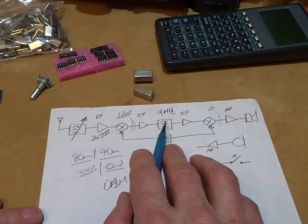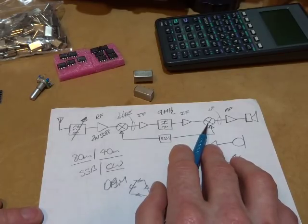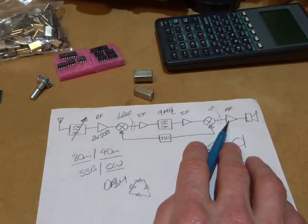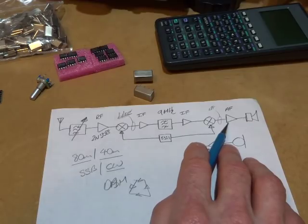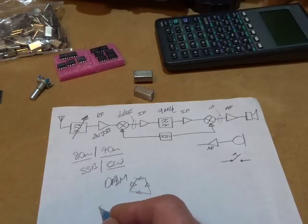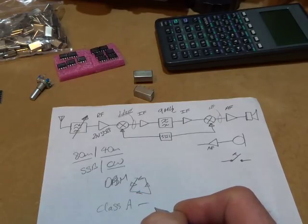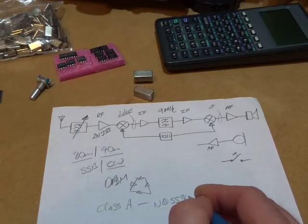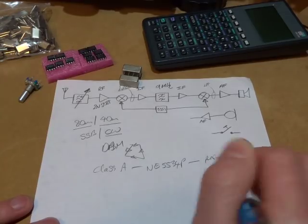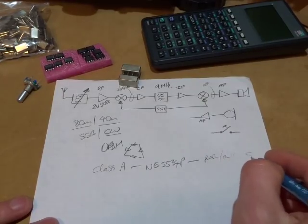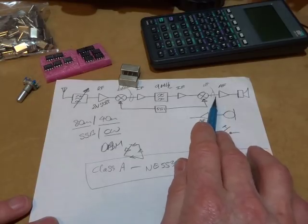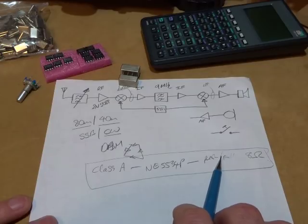The product detector will be a homebrew double balanced mixer. For the audio frequency amplifier, what I haven't done before and I wouldn't mind trying for this particular build is to do an analog push-pull style AF amplifier. My current thinking is to make a combination of a class A amplifier feeding into a low noise NE5534P, and then into a push-pull amplifier before feeding into the speaker. It'll be an 8 ohms speaker. I just haven't played around with this push-pull style before, so I wouldn't mind giving that a go.